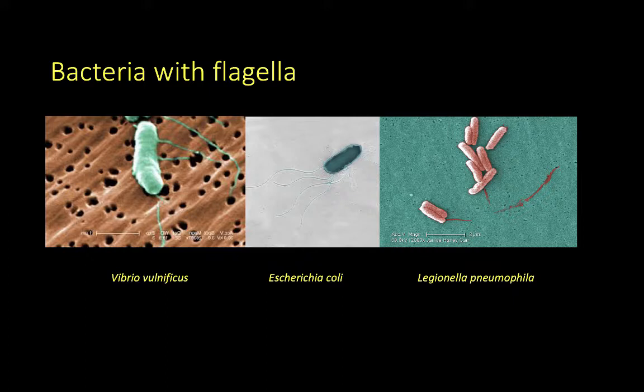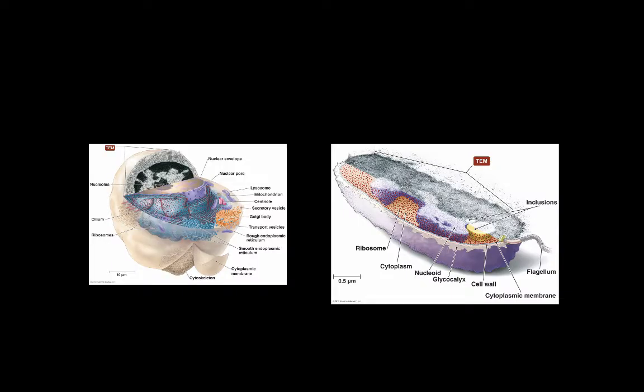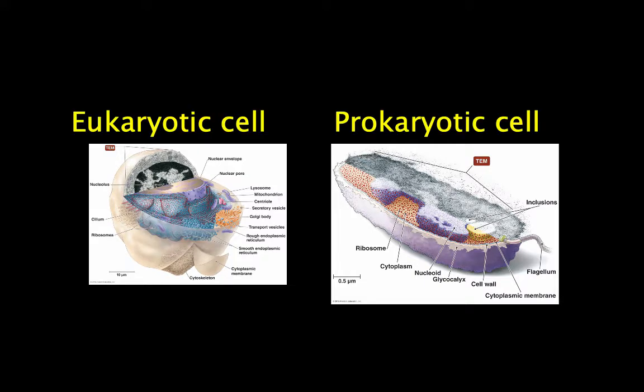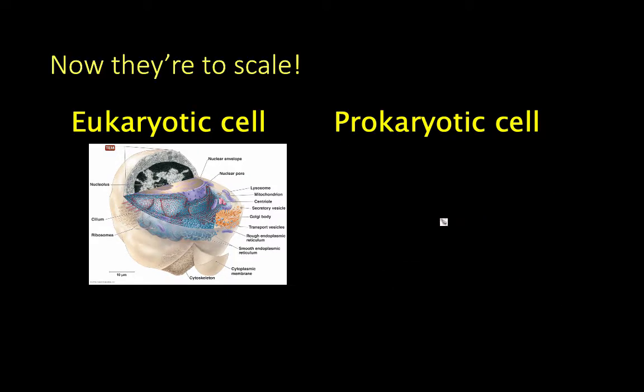Although the term flagella is used for similar looking structures in prokaryotic and eukaryotic cells, there are important differences. The one most commonly overlooked is the difference in size. Remember that, assuming a spherical shape, the radius of a prokaryotic cell is 50 times smaller than that of a eukaryotic cell, meaning that prokaryotic flagella are much smaller than eukaryotic flagella.